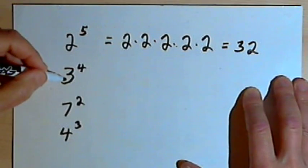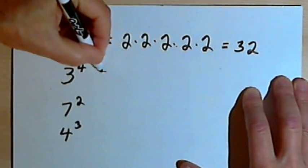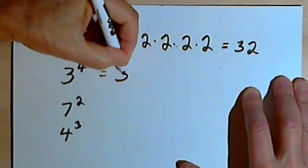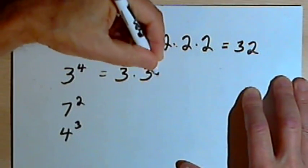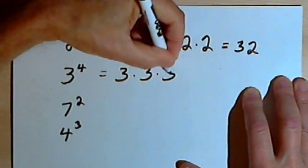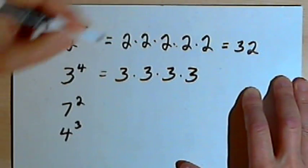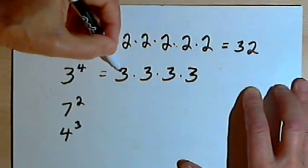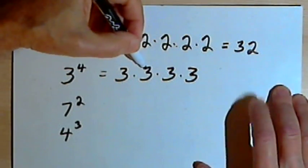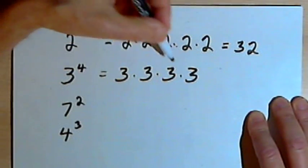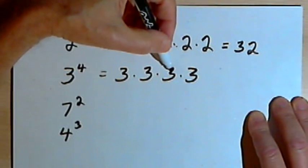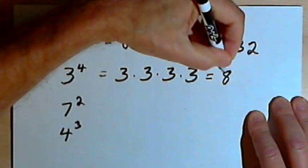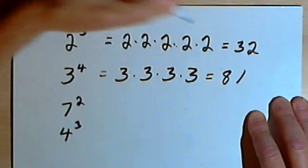If I have 3 to the 4th power, that's the base 3 multiplied repeatedly 4 times — I know that from the exponent. So 3 times 3 is 9, times 3 again is 27, and times 3 again is 81.